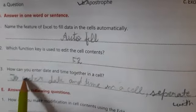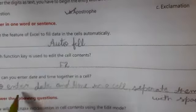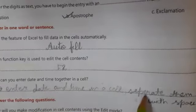Number three: How can you enter date and time together in a cell? To enter date and time in a cell, separate them with space. Okay.